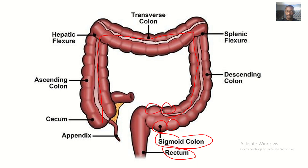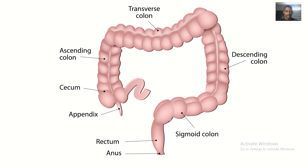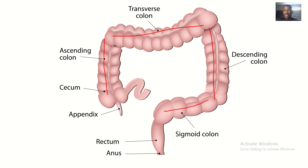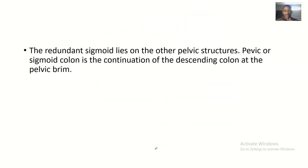The sacculations I'm referring to are these folds — these ridges you can see here. Looking at the diagram: ascending colon, transverse colon, descending colon — after the descending colon we have the sigmoid colon, which is between 12 to 75 centimeters long with an average of 40 centimeters. After the sigmoid colon comes the rectum.